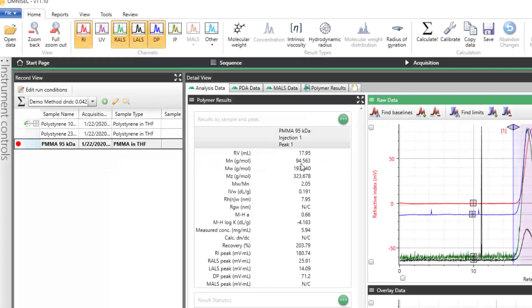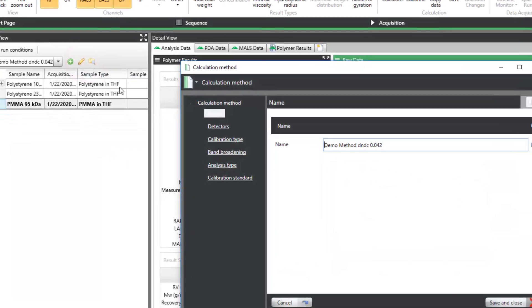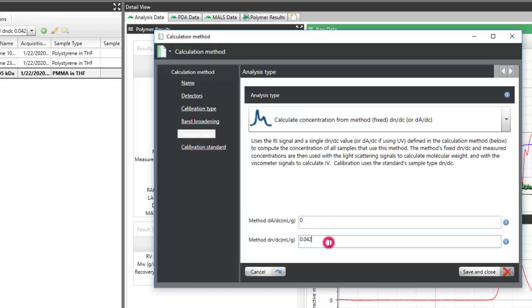To change the DNDC value for the method, click the Edit Method icon, set the new method DNDC, update the method name, and click Save.